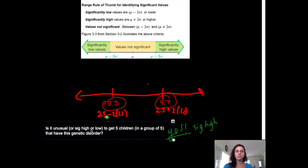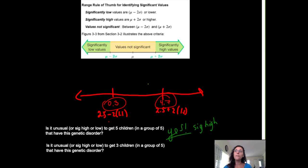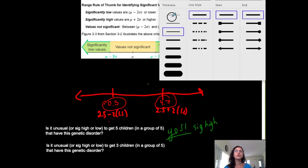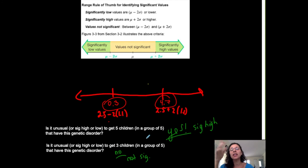Second question: is it unusual or significantly high or low to get three children in a group of five with this genetic disorder? The answer is no — it is not unusual, not significantly high, not significantly low. Why? Because it falls within two standard deviations of the mean, so using the range rule of thumb it is typical.